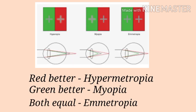If the patient sees one color more clearly than the other, there are chances of myopia or hypermetropia. If the patient says red is more clear than green, such a patient has hypermetropia and needs plus lenses to treat the hypermetropia.